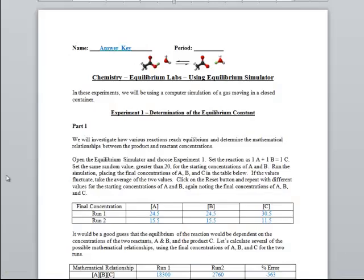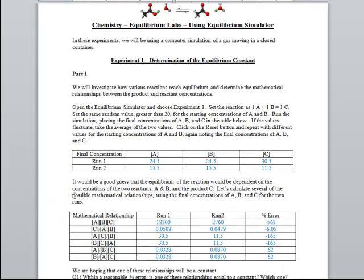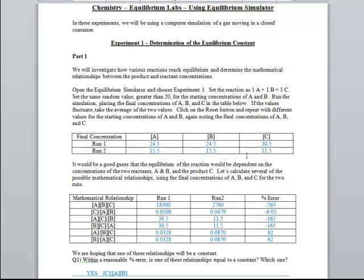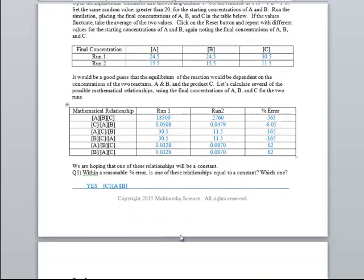Here is the first experimental handout. This is the answer key. In experiment one, students put a couple of values of the concentration of A and B, take some data, and then are asked to come up with a bunch of mathematical relationships and see which one of them seems to predict the equilibrium constant.